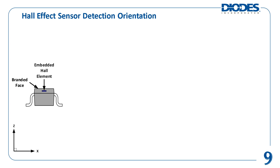The orientation of the Hall element, sometimes called the Hall plate, is important for proper operation of Hall Effect sensors. Incorrect orientation of the Hall element can result in erroneous detection of magnetic fields. In typical single-axis Hall Effect sensor construction, the Hall element is embedded on a silicon chip that is then put into an IC package in such a way that the Hall element is parallel with the top surface of the package. The top surface of the package is typically where the part's marking information is located, and is sometimes called the branded face of the package.